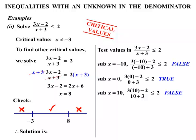The solution is values between minus 3 and 8, so we write minus 3 less than x less than or equal to 8. However, since the critical value x cannot equal minus 3, we place an open circle at minus 3 on the number line and change that boundary to a strict less than sign. So the final answer is minus 3 less than x less than or equal to 8. That concludes the lesson.